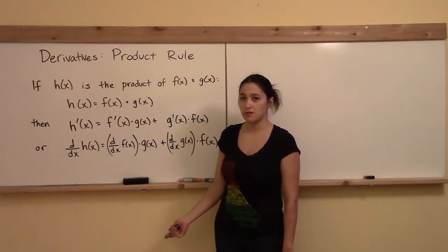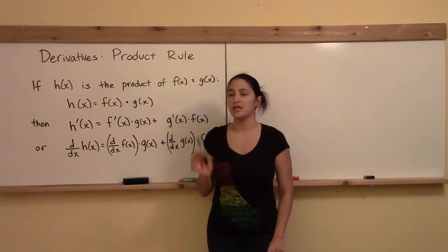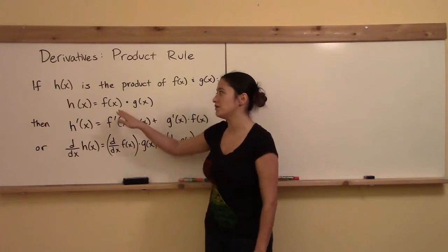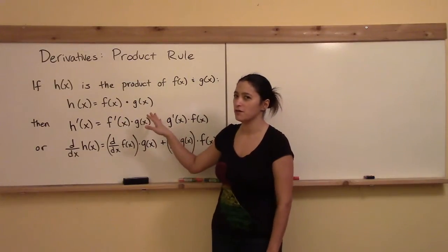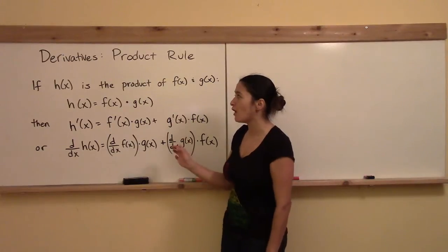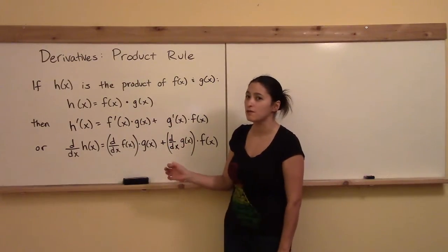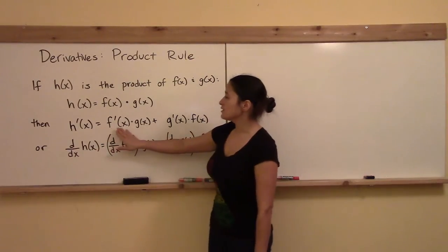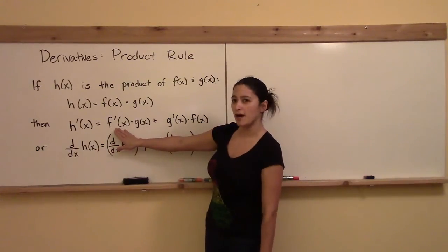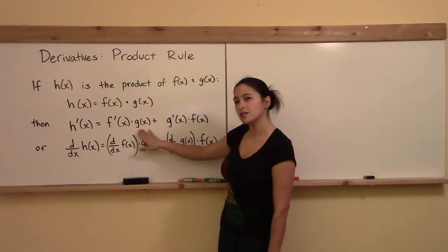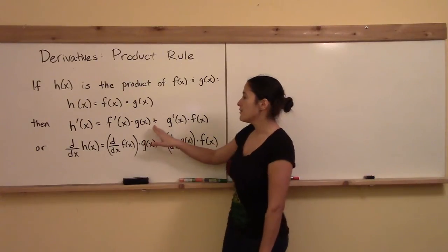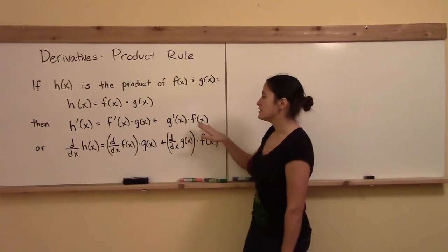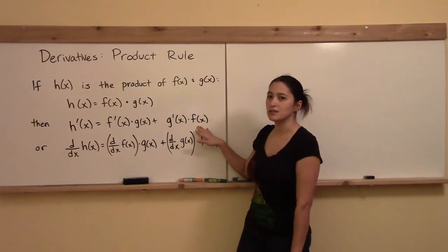So what's the derivative of h of x? First of all, let me tell you what it's not. The derivative of h of x is not the derivative of f of x times the derivative of g of x. It is not the product of each individual derivative. What the derivative of h of x is equal to is actually the derivative of f of x times g of x without taking its derivative, then we add the derivative of g of x times f of x without taking its derivative.